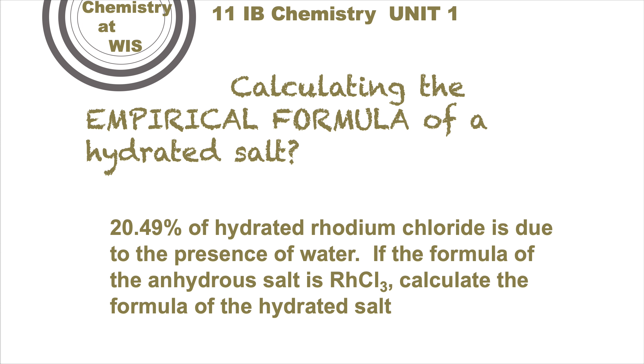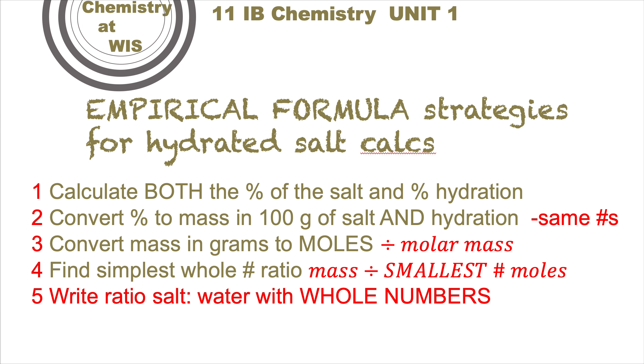Here are some strategies. Calculate the percentages of both the salt part and the water of crystallization. Convert the percentages to mass in 100 grams - choose 100 because percentage is a fraction of 100. Then convert that mass for both the water part and salt to moles, and find the simplest whole number ratio of the moles.